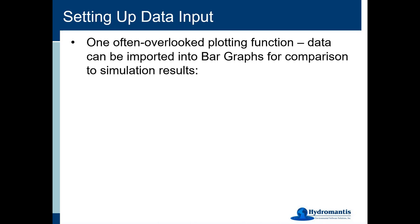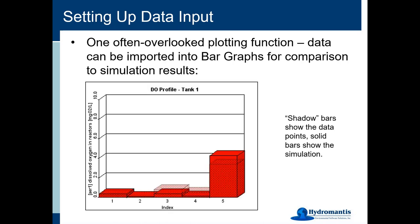I want to mention one often overlooked plotting function — plotting data alongside your bar graphs. What I was showing previously were XY time series graphs, where there was a simulation line and a bunch of data points. You can do that for bar graphs as well. You enter the data using exactly the same process, just make sure you have the right bars laid out so you're selecting the right variable, then enter a time series of data there too. I find this quite useful if you're working on a BNR project and you have a profile of ammonia, nitrate, or DO, and you want to get the bar graph — which shows reactors in series — nicely lined up with data.